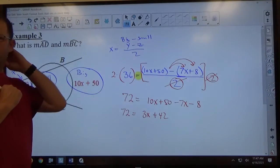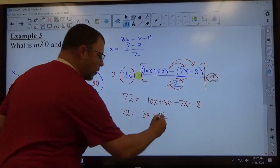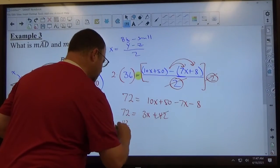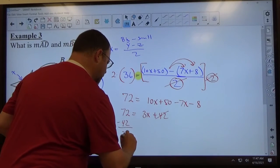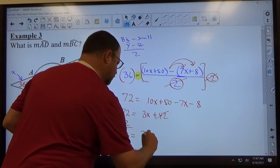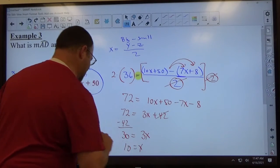And now it's just a solve for x problem, right? Pretty easy. I'm going to put the 42 left minus 42. So 72 minus 42 is 30. 3x equals 30 divided by 3, x equals 10.